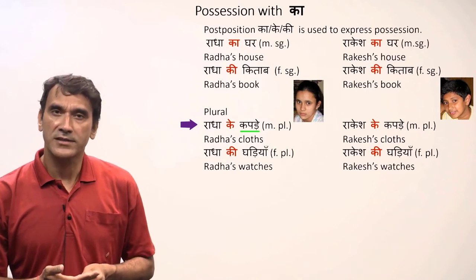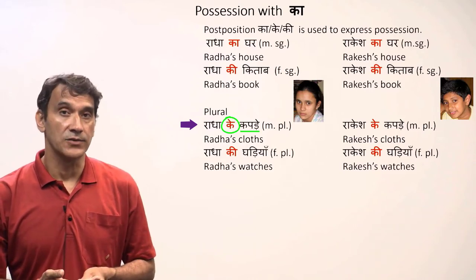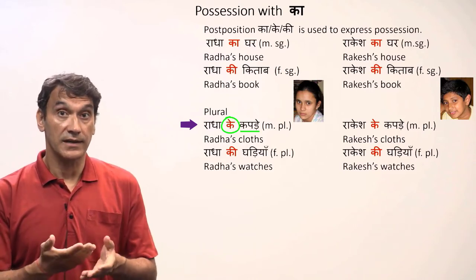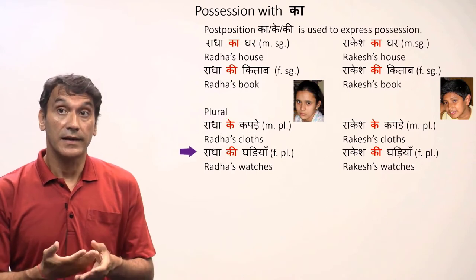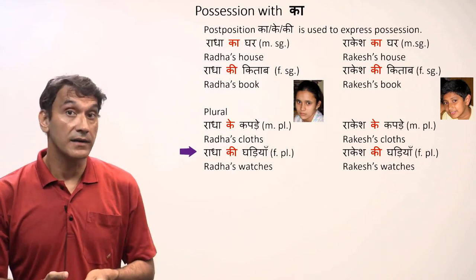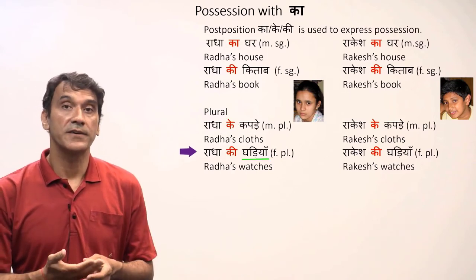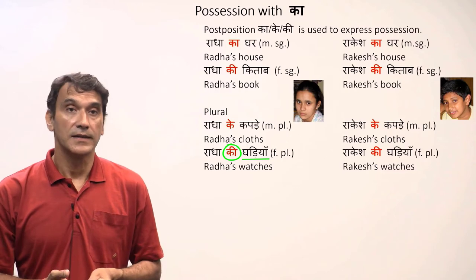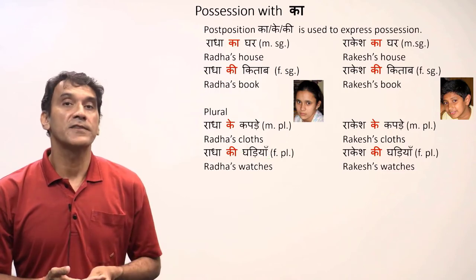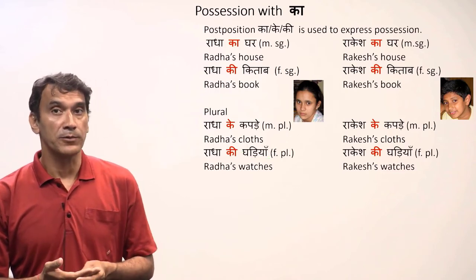Radha ke kapde — Radha's clothes. 'Kapde' is masculine plural, so the post position 'ke' is used: radha ke kapde. Radha ki ghariyan — Radha's watches. 'Ghariyan' is feminine plural, so it is 'ki'. There is no difference between feminine singular and feminine plural — it is 'ki' for both.